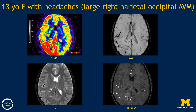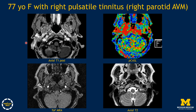ASL can also be used for vascular malformations. In the right parietal occipital region, there is elevated blood flow compared to the rest of the brain. SWI shows high susceptibility throughout with lots of T2 flow voids and increased vascular structures on time-of-flight MRA, consistent with an AVM. This is also a patient with right-sided pulsatile tinnitus showing an enhancing lesion in the right parotid gland with increased flow on ASL, increased vascularity on time-of-flight MRA, and a flow void — consistent with a right parotid AVM.